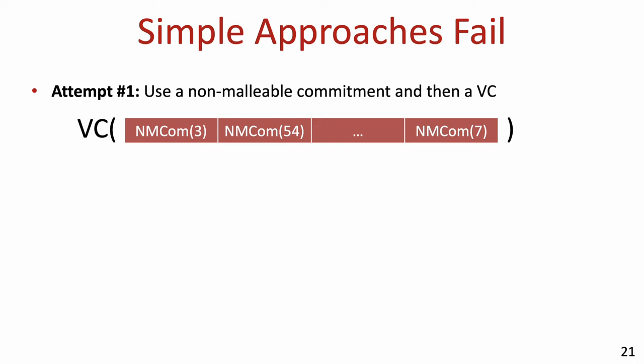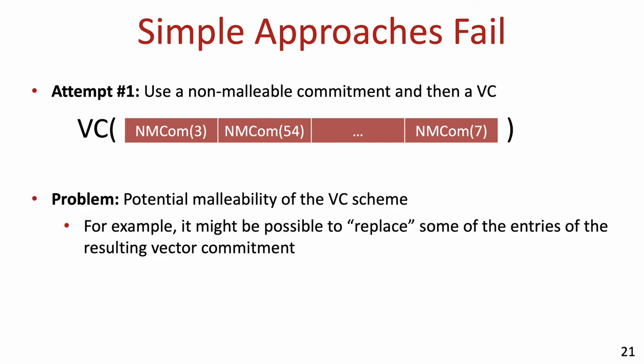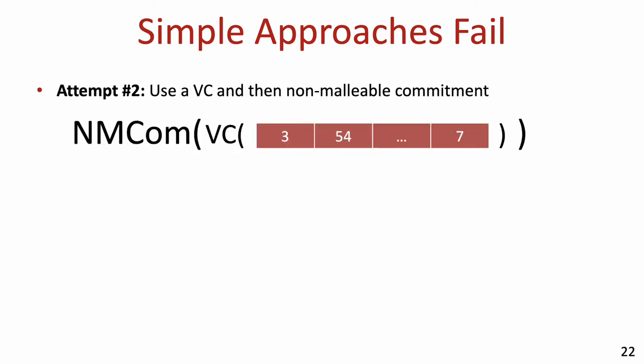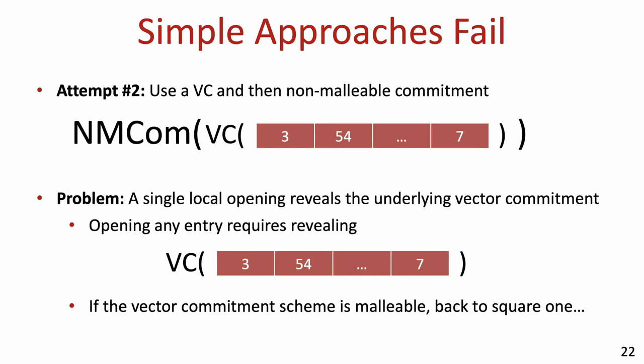Before describing our construction of non-malleable VCs, we observed that simple approaches fail to satisfy our security notion. Consider the approach of committing to each entry using some non-malleable commitment scheme, then committing to the vector of all commitments using a vector commitment scheme. This approach fails due to the potential malleability of the vector commitment scheme — given a VC to some vector, it might be easy to commit to the same vector while replacing only its first entry. Another approach of first committing to the entire vector using a VC and then committing to the result using a non-malleable commitment scheme fails when considering adversaries that observe local openings, since after observing a single local opening, the adversary learns the potentially malleable vector commitment and we're back to square one.